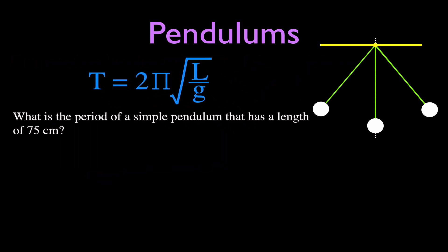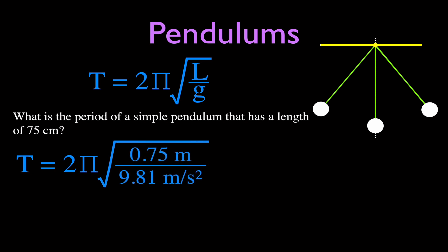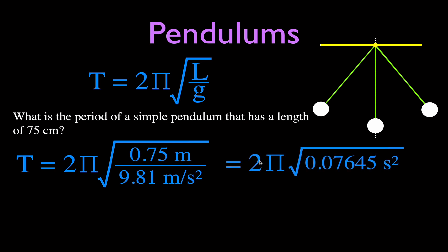Let's do one simple example. What is the period of a simple pendulum that has a length of 75 centimeters? You have to convert to meters: 0.75 m. The problem doesn't specify location, so we assume Earth gravity at 9.81 m/s². T = 2π × √(0.75 / 9.81). Taking the square root of that value and multiplying, the period of that pendulum is 1.74 seconds.